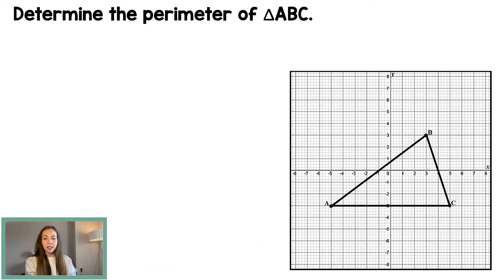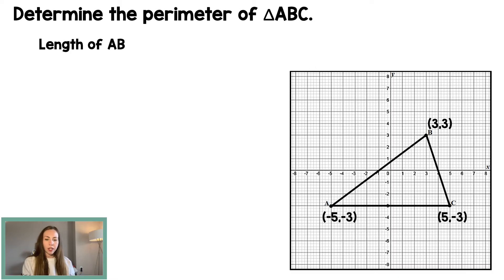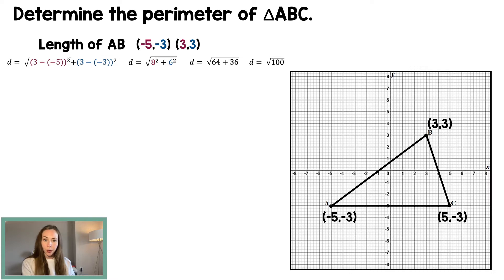The first thing we're going to do is determine the perimeter of triangle ABC. We need to find the location of those three points: Point A is at (−5, −3), C is at (5, −3), and B is at (3, 3). The perimeter is simply the distance around the shape, so we need to find the length of the three line segments. Starting with AB, which has endpoints (−5, −3) and (3, 3): plugging into the distance formula gives us 8² + 6² = √(64 + 36) = √100. So the distance AB is 10 units long.